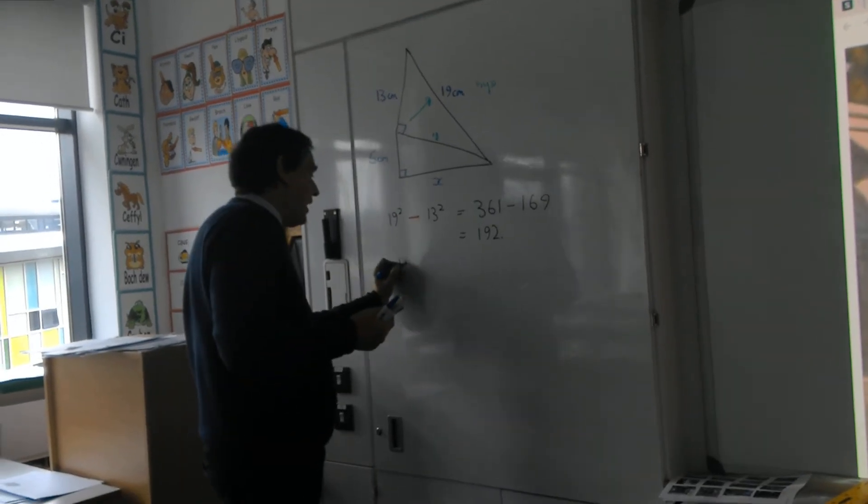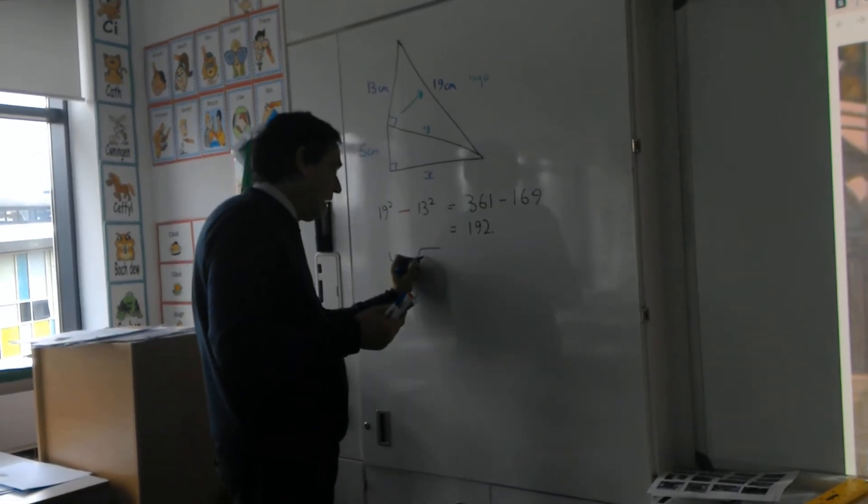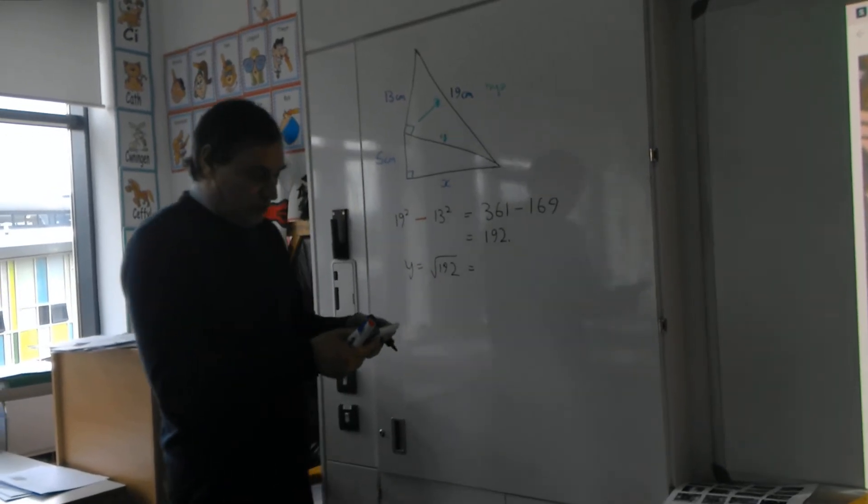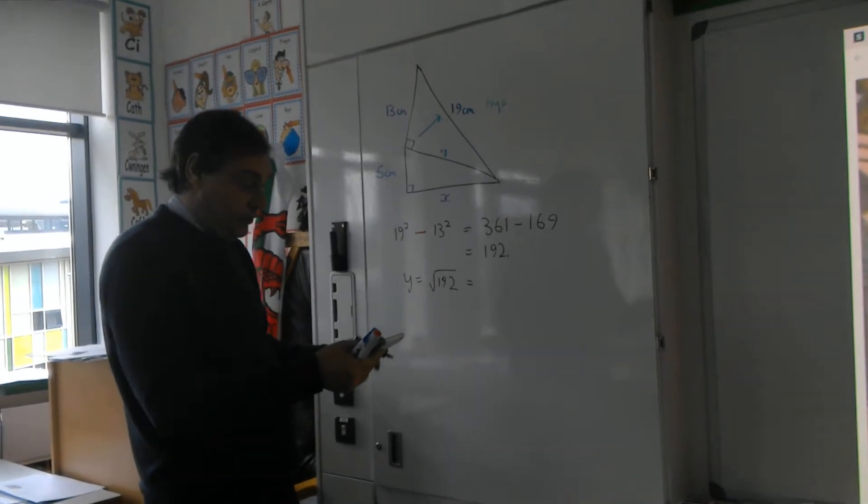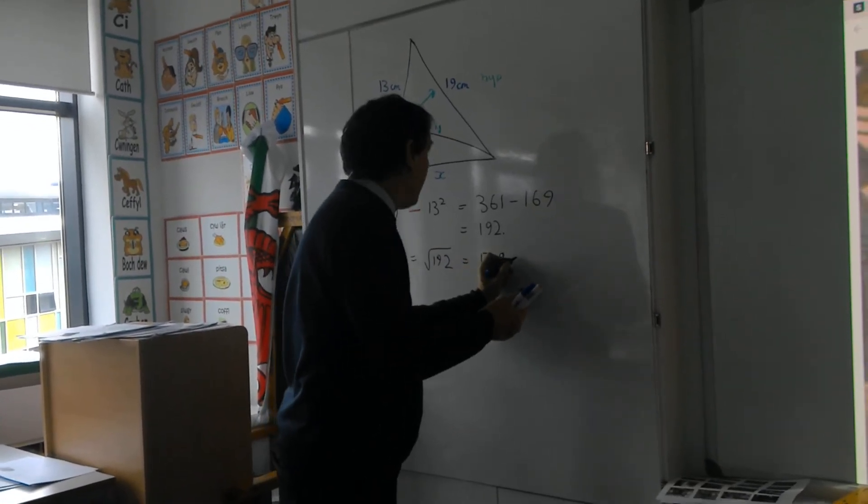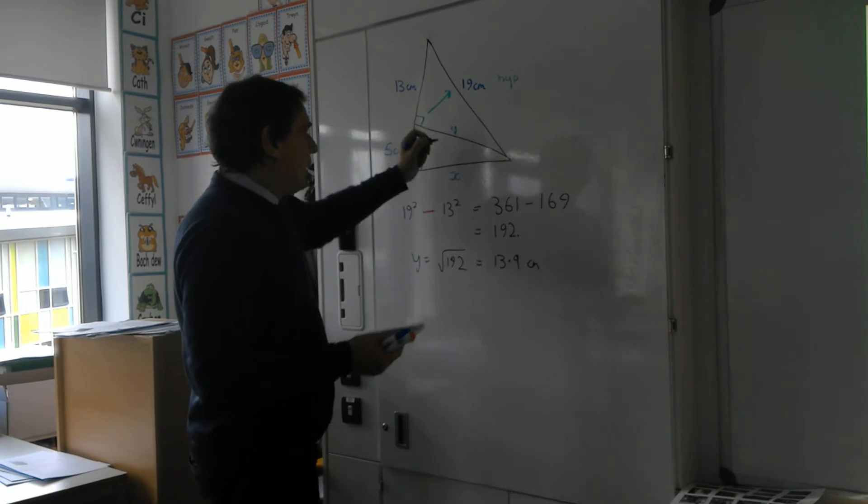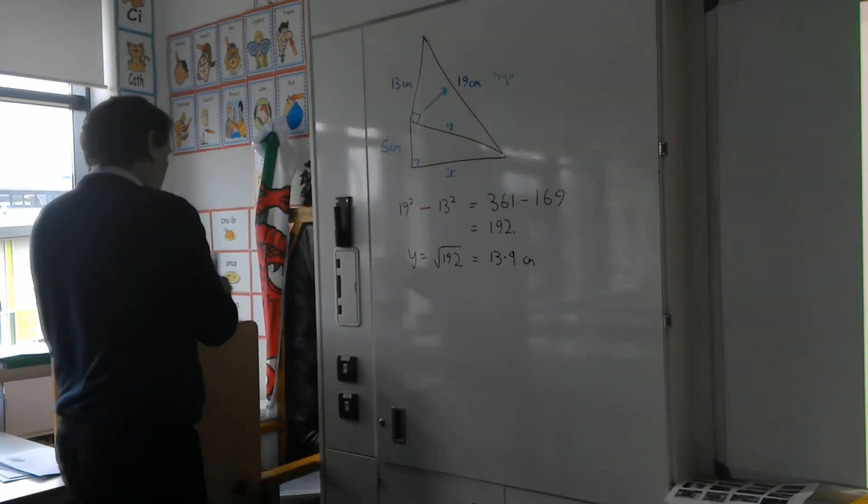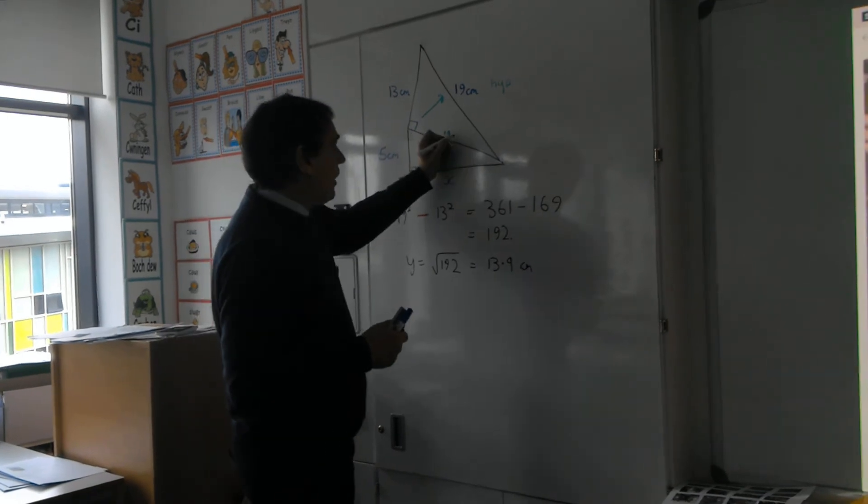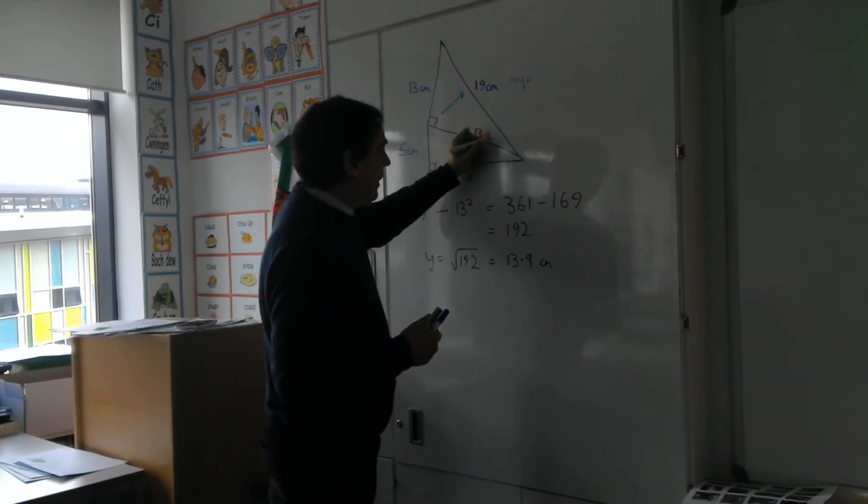So to find y, I'm going to find out the square root of my 192. Square root of 192, I'm going to calculate root button 1 by 2. It gives me 13.9 centimetres. So in other words, the y, I'm going to put that in red to indicate that I have to find it. So the y is 13.9 centimetres.